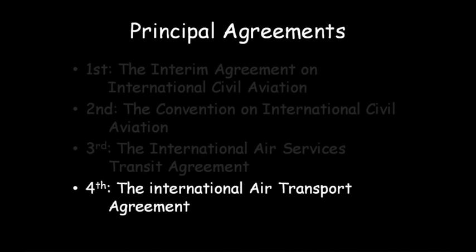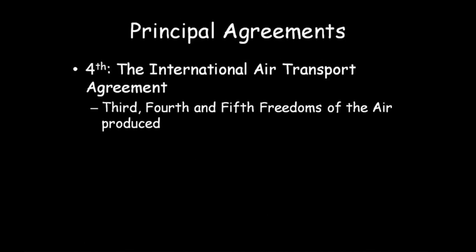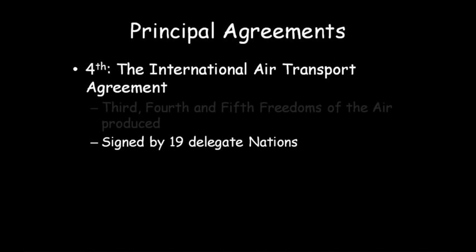The fourth principal agreement was the International Air Transport Agreement. This agreement founded the third, fourth, and fifth commercial freedoms. The third being the right to set down traffic in a foreign country, and the fourth and fifth relating to the right to pick up or set down traffic in a third country in connection with a third or fourth freedom flight. It was also signed by 19 delegate nations.